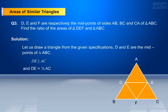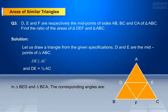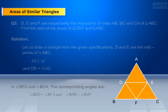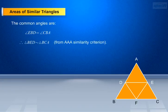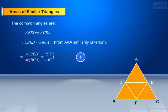From the figure, we can say that in triangle BED and triangle BCA, the corresponding angles are: angle BED equals angle BCA, and angle BDE equals angle BAC. And the common angle is angle EBD equals angle CBA. Therefore, triangle BED is similar to triangle BCA by AA similarity criteria. This implies AR of BED by AR of BCA equals DE/AC whole square. Make it as equation 1.